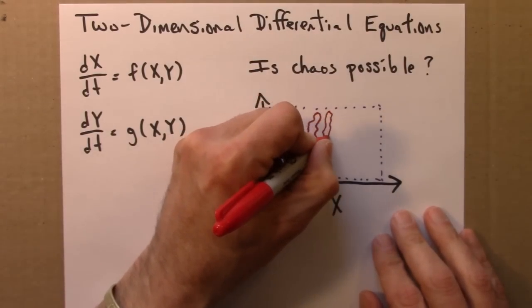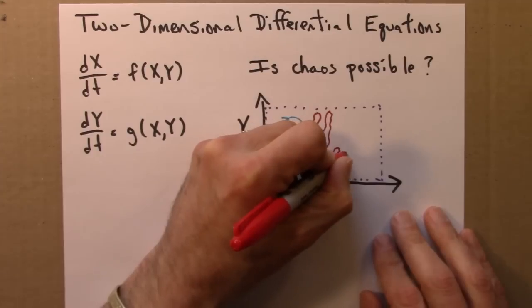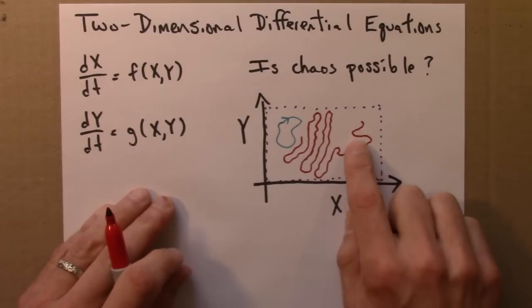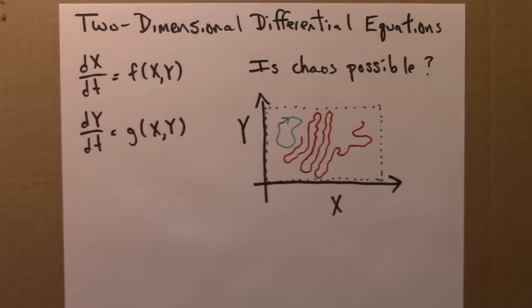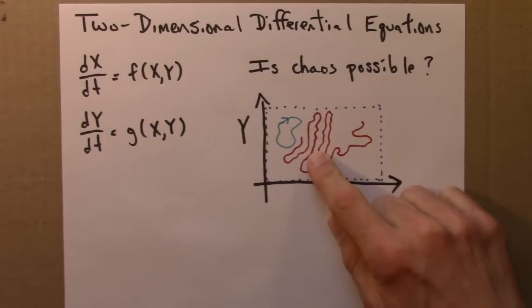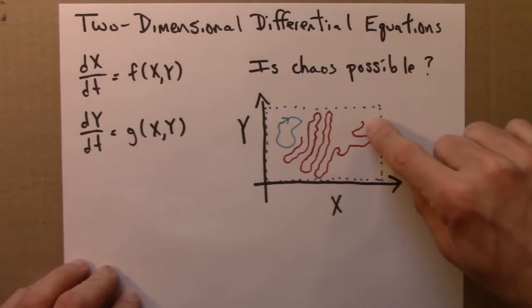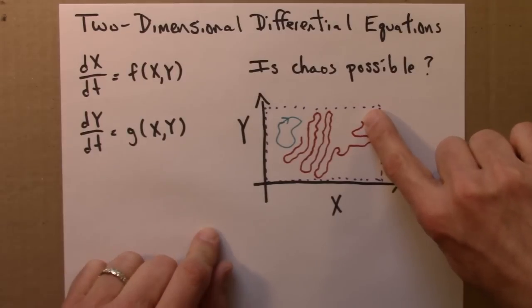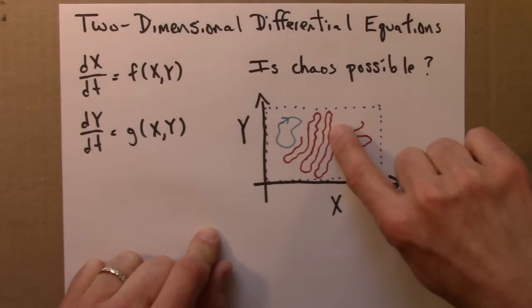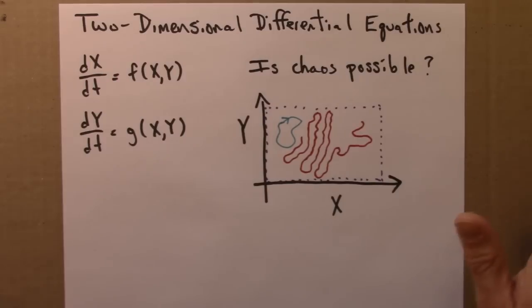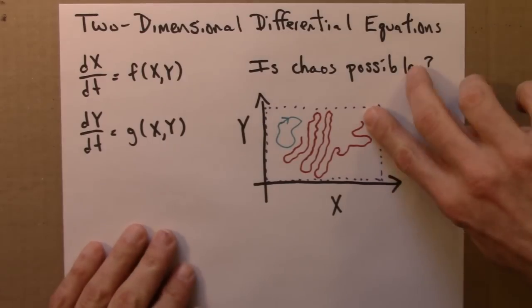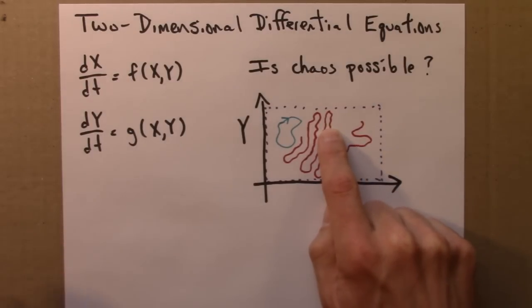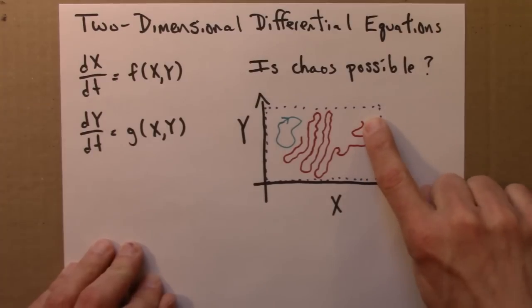So I'm in this bounded region, and I can't ever cross. And so I'm imagining this trajectory moving around. And what I'm trying to illustrate here is that as I draw this line, I'm making it harder and harder for me, or for this line, to keep moving around without bumping into it. If it bumps into it, game over. It's periodic. It can't be aperiodic. So the fact that we're never allowed to cross a line because of determinism, what we discussed in the previous video, limits the behavior that's possible.